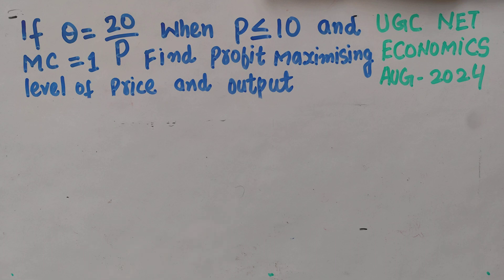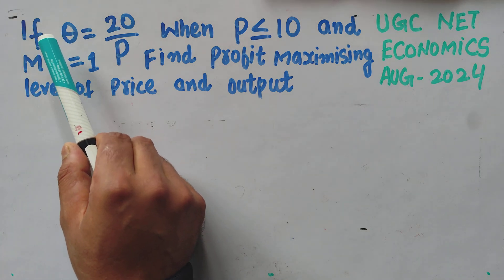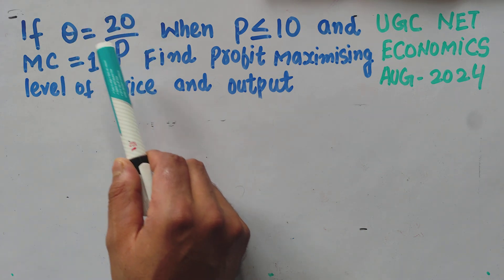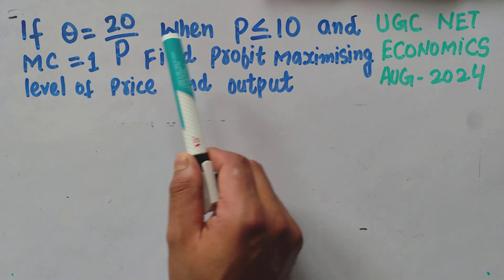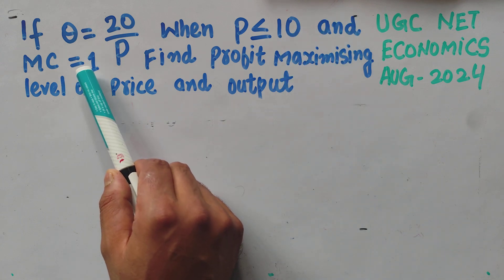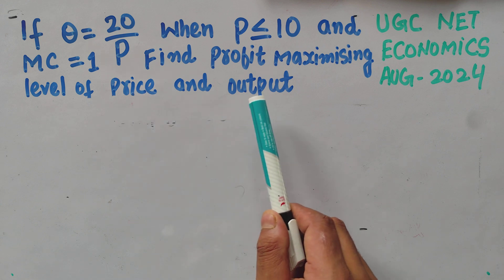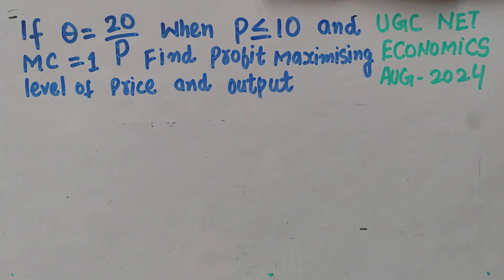In this video we will solve an interesting question that was asked in UGC NET Economics paper of August 2024. The question is: if the demand function is q = 20/p, where q is the output, p is the price, when price is less than or equal to 10 and marginal cost is equal to 1, we have to find out the profit-maximizing level of price and output.